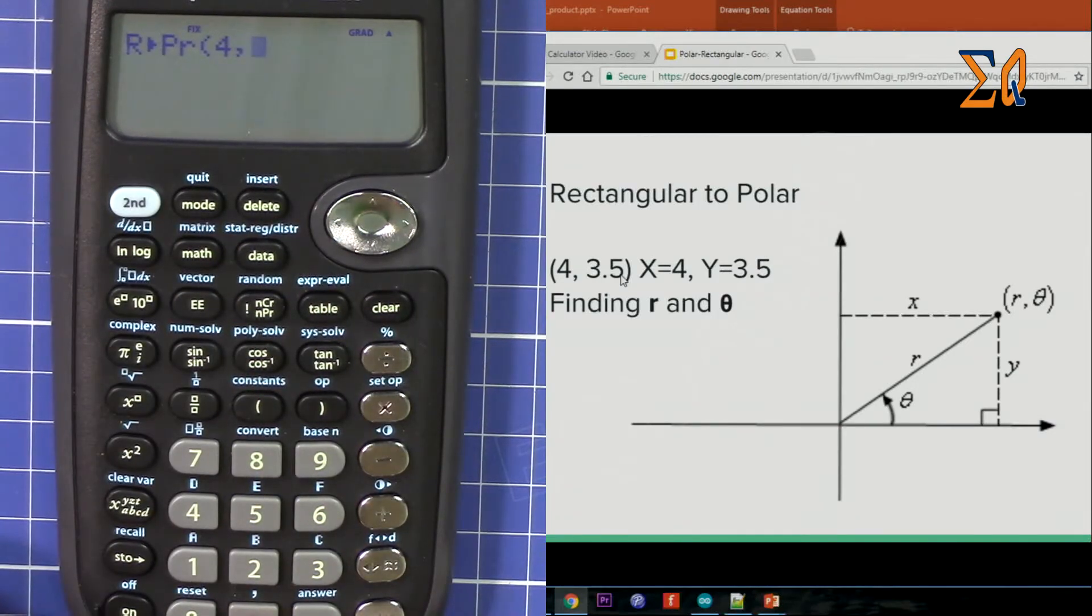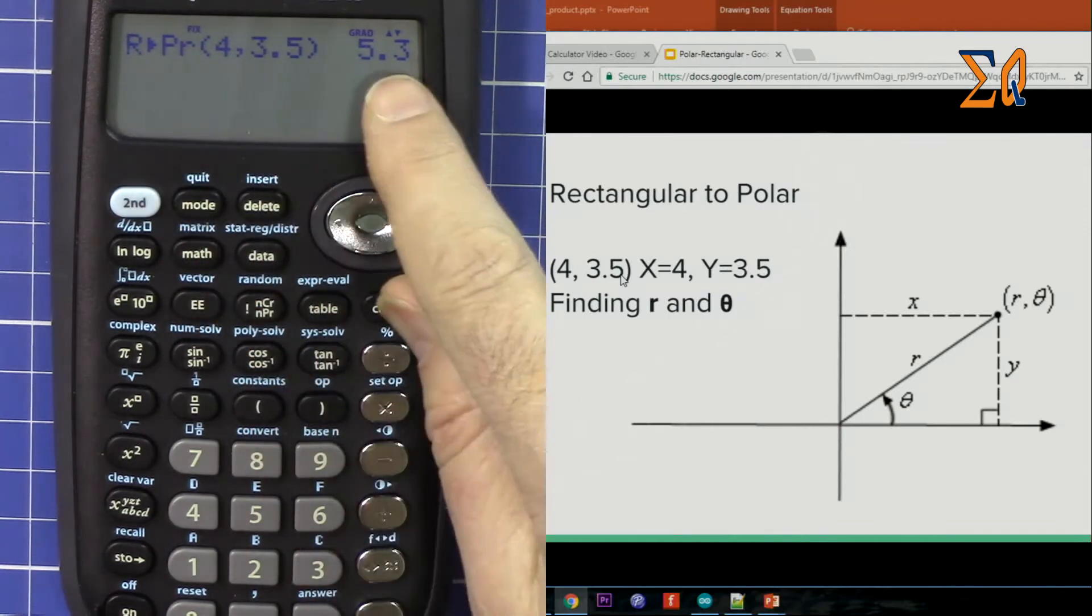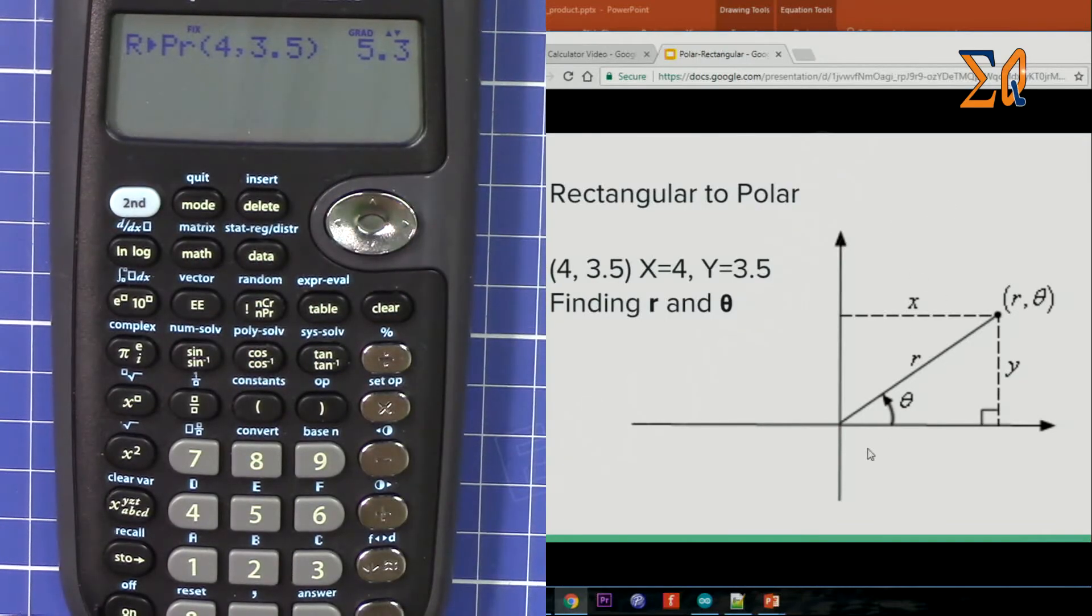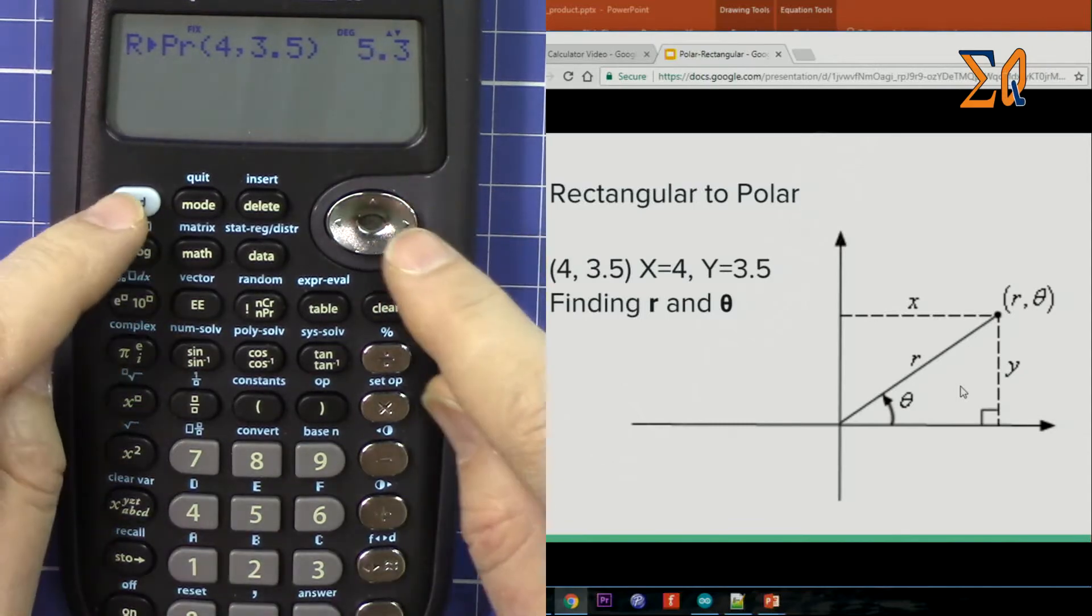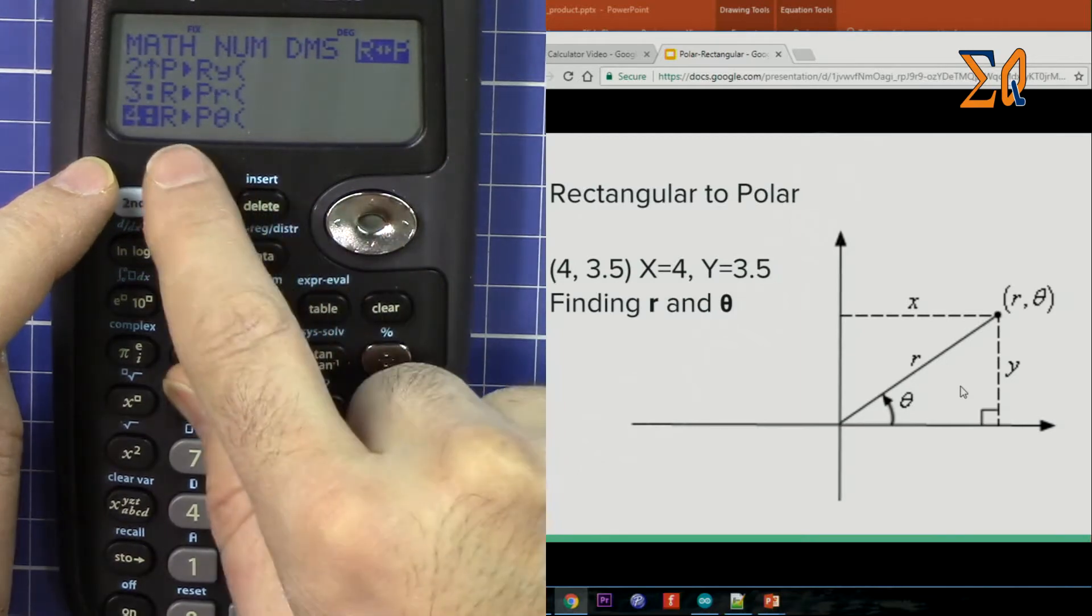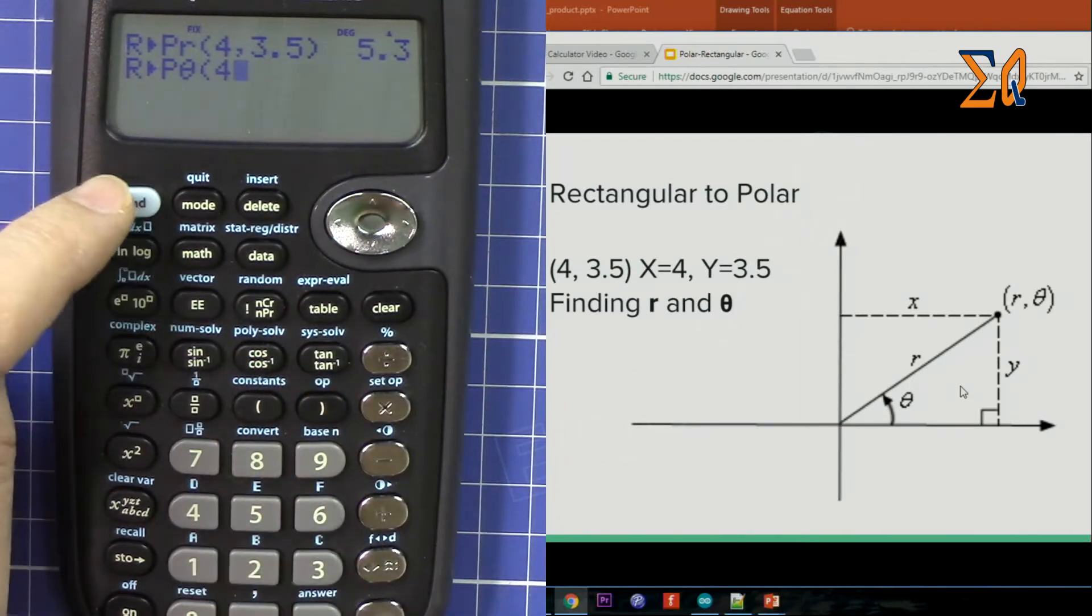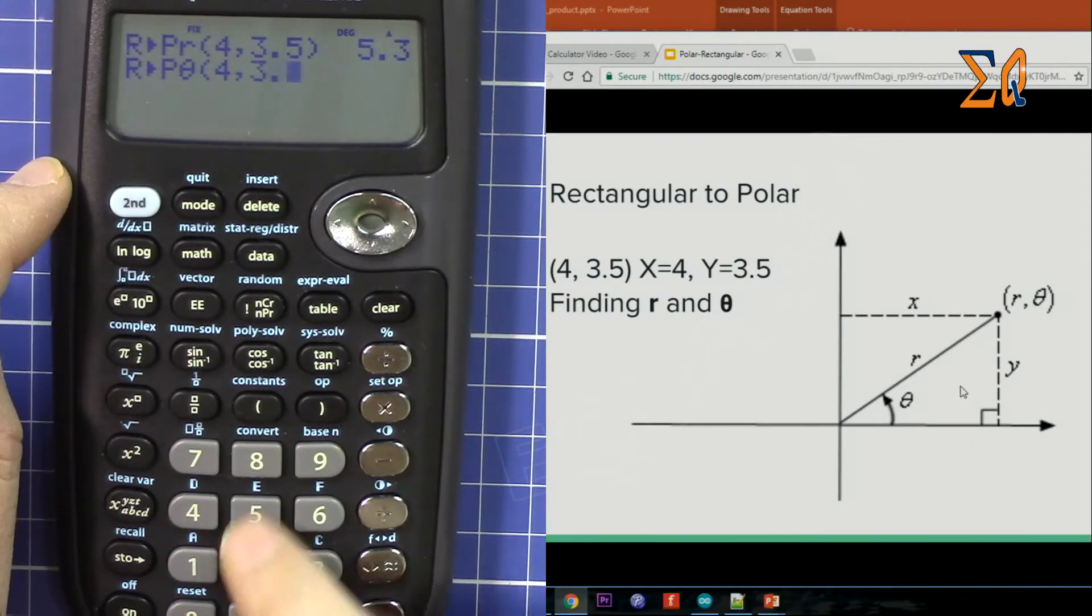Let me press this and you see 5.3. So that is the magnitude here, 5.3. Then if you get the theta, press math, go to the left, and this time will be 4, but I'm going to show you the 4 that's for the theta. Press 4, second function, comma, 3.5, close it, and that will give you the angle in degrees, so that's 41.2.